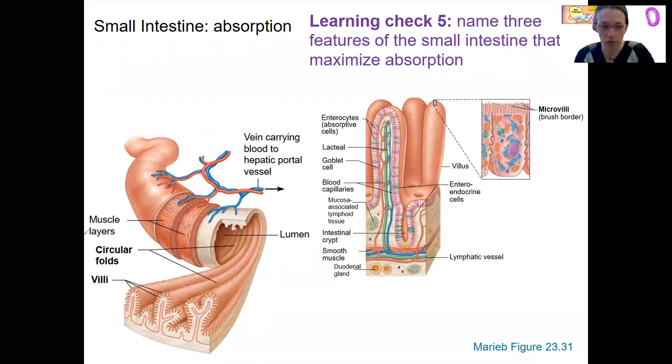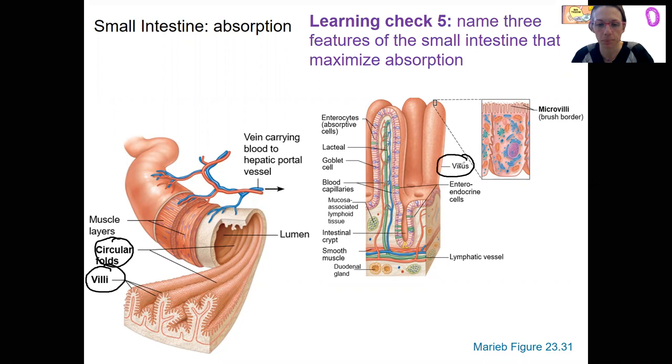So here is some reminders of anatomy. We've got circular folds that kind of go this way. We've got villi. Here is a single villus here. We've got microvilli, which are also called a brush border, and then we've got a long tube is the fourth possibility.